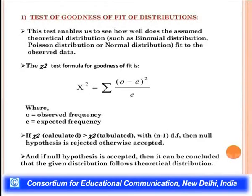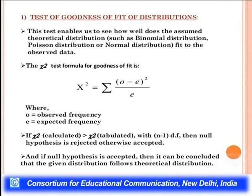The goodness of fit test enables us to see how well an assumed theoretical distribution — such as binomial, Poisson, or normal — fits the observed data. The chi-square formula for goodness of fit is: χ² = Σ(O − E)² / E, where O is the observed frequency and E is the expected frequency. If χ²(calculated) > χ²(tabulated) with n − 1 degrees of freedom, the null hypothesis is rejected; otherwise accepted.